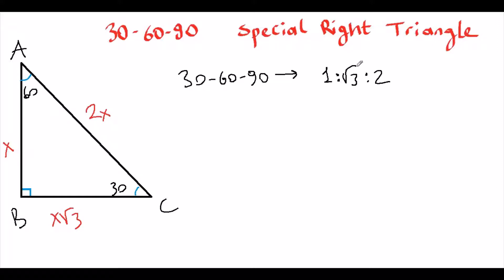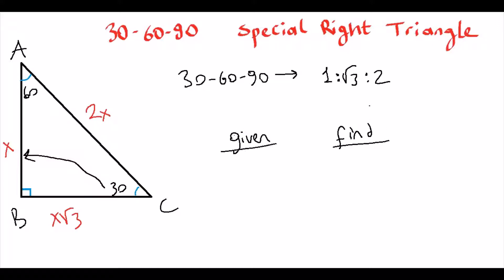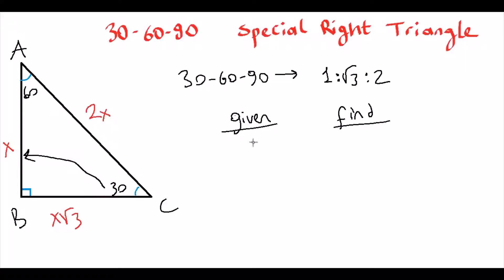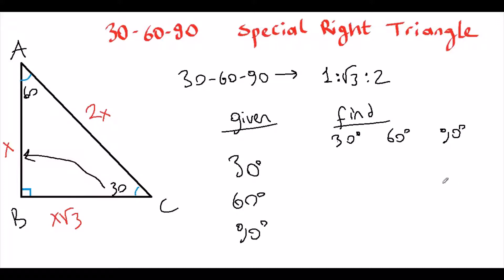Using this relation, we can find all missing lengths. We can make a given-and-find chart: given across the 30°, 60°, or 90° — and find the rest in each case.